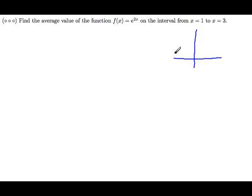e to the 2x is an exponential function, so it's growing like this, and 1 and 3 would be somewhere in here and here.